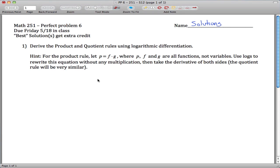Alright, here are solutions to perfect problem six for Math 251. Basically it's saying derive the product and quotient rules using logarithmic differentiation. Then I give you a little hint on what might be a good way to do it.